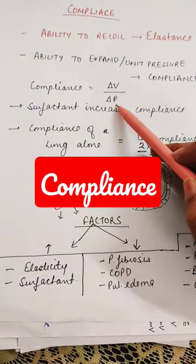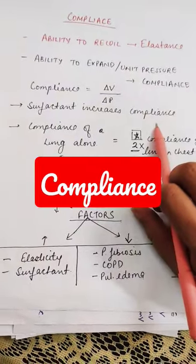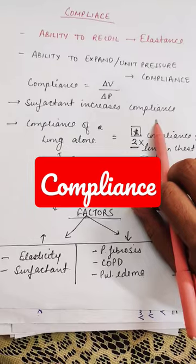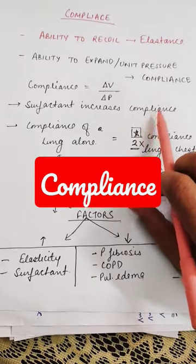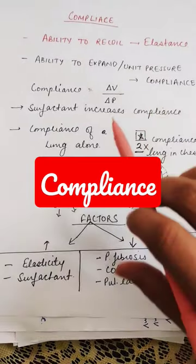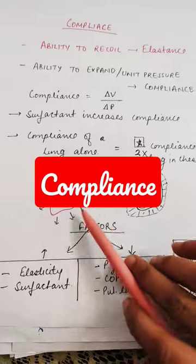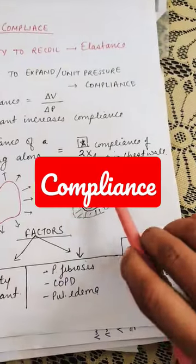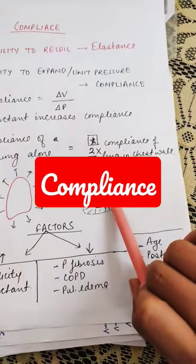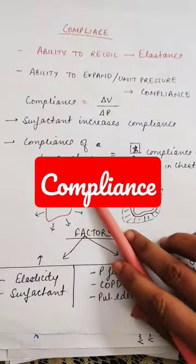The formula for compliance is change in volume divided by change in pressure. Surfactant increases compliance, so the ability to expand increases with surfactant. If we compare compliance of the lung alone versus the lung in the chest wall, the lung alone will be two times more compliant.